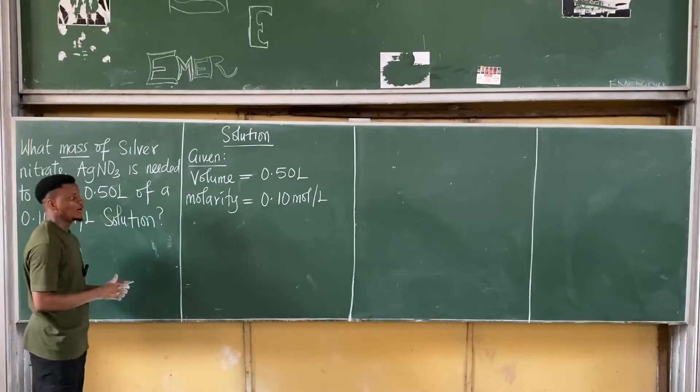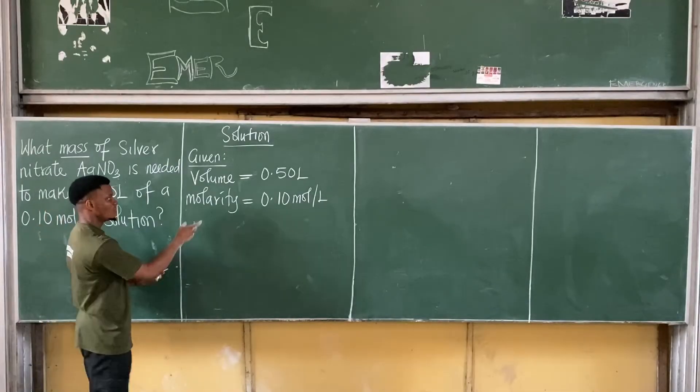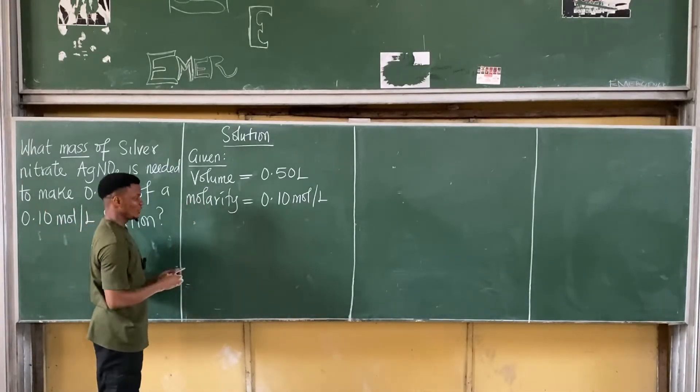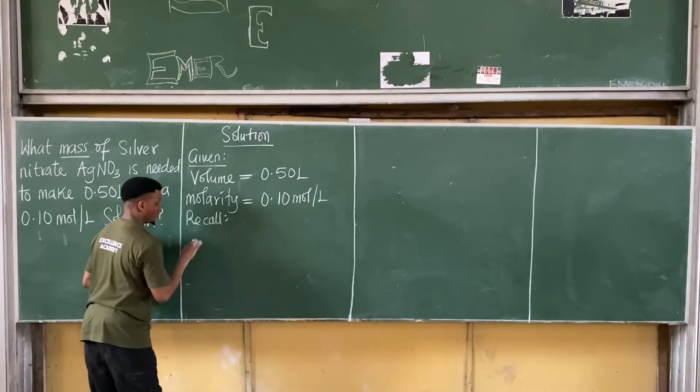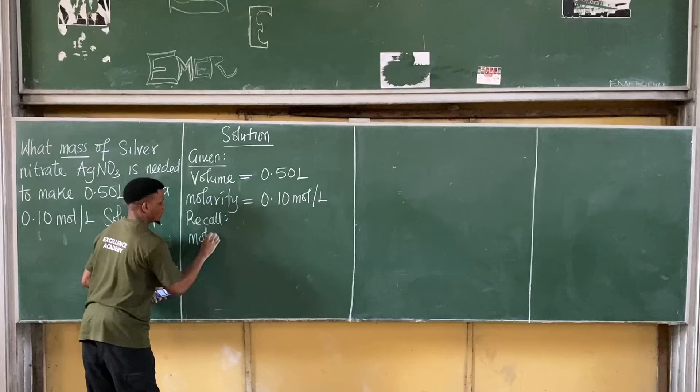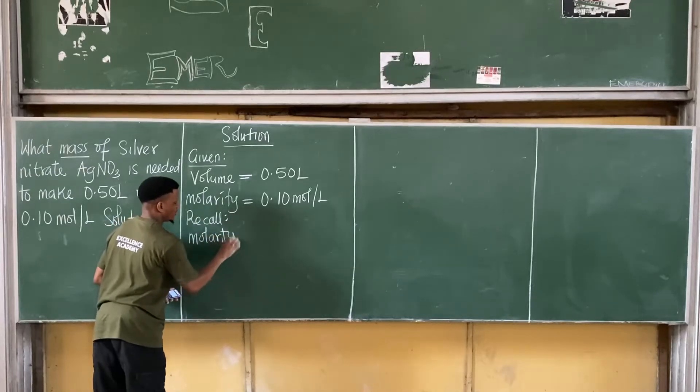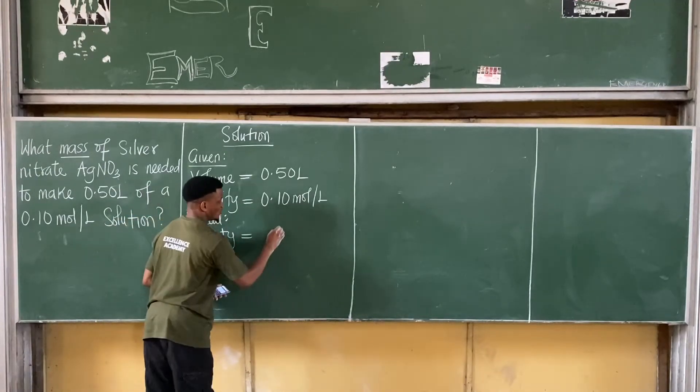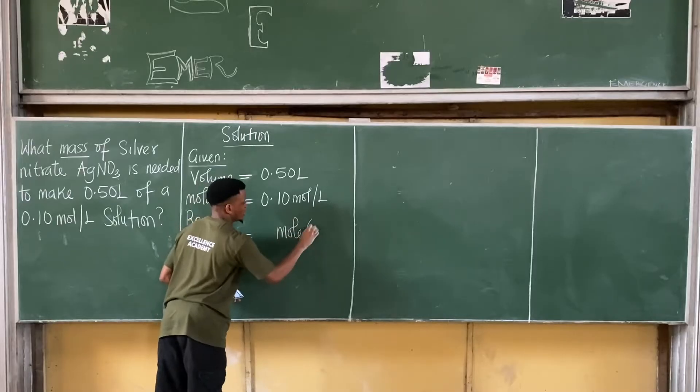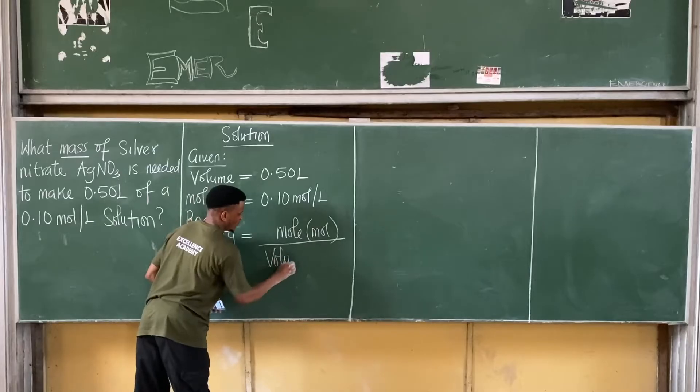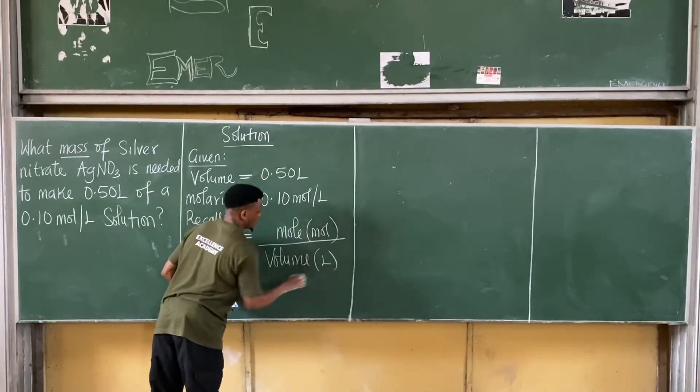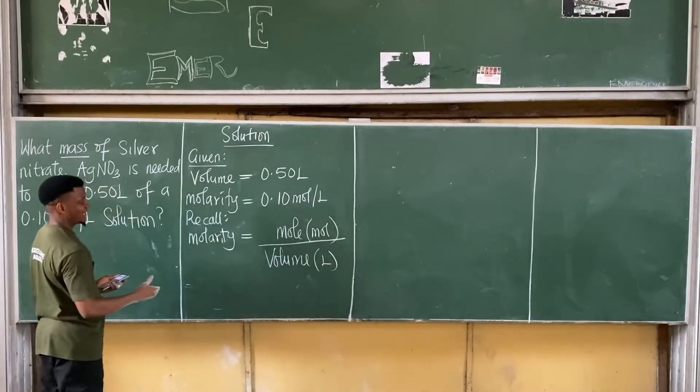Alright, so from this, what is the relationship between molarity and volume? What do we know? Let's recall something. Recall that molarity is equal to moles in moles all over volume in litres. So from here now,